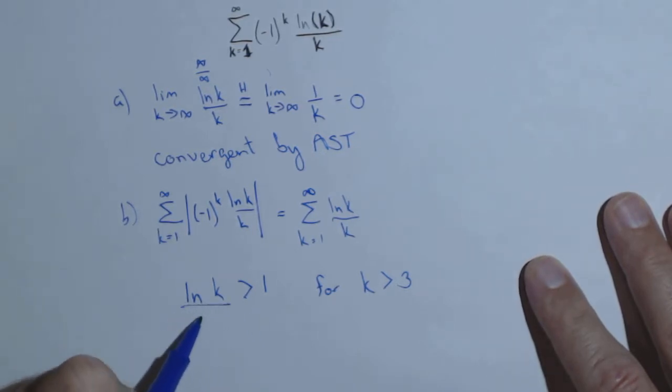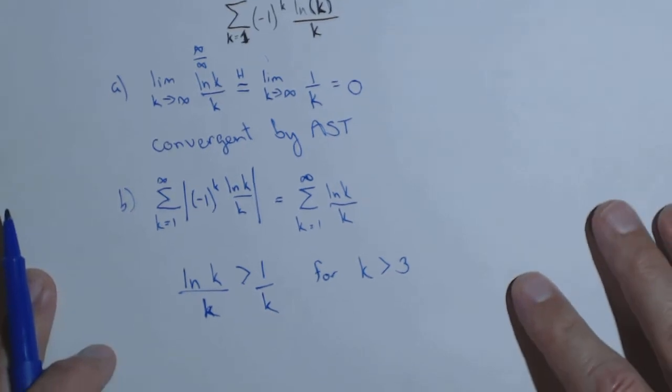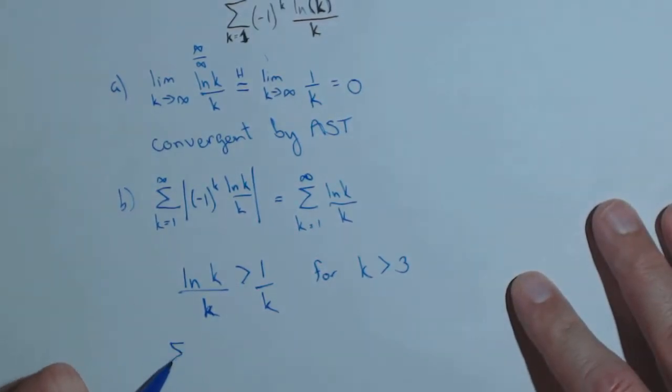Well, divide both of these by k. So ln of k over k is greater than one over k as long as k is greater than three. And we know that the series one over k is our harmonic series. It diverges.